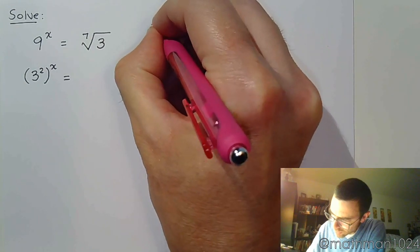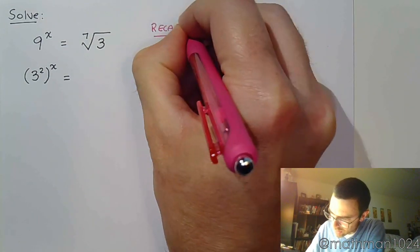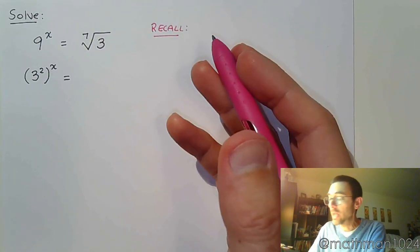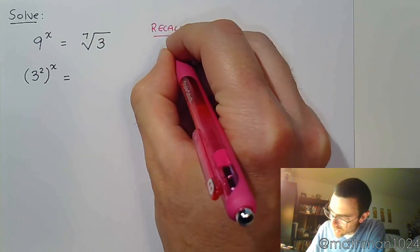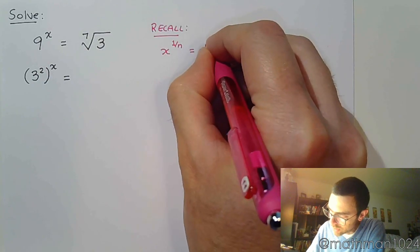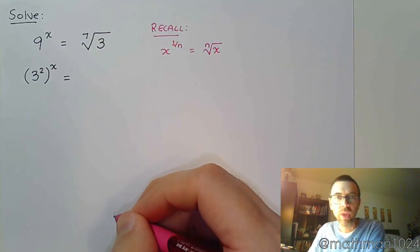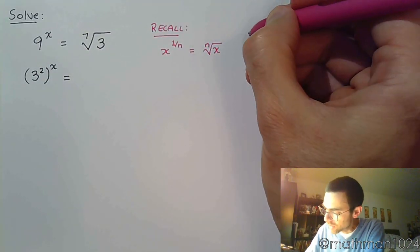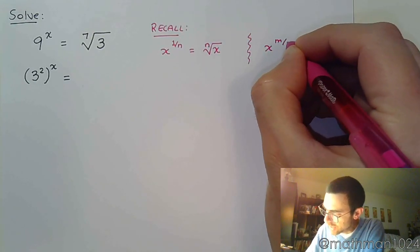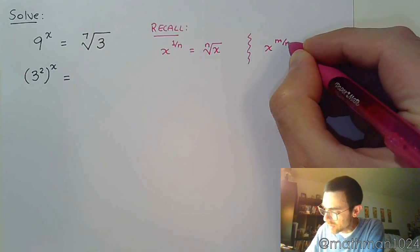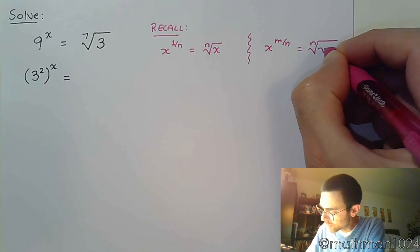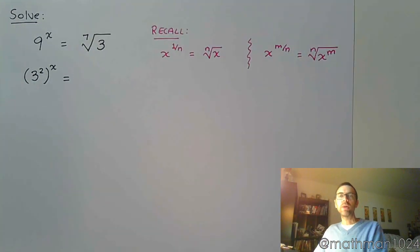Let me remind you of something from our dealings with radicals and rational exponents. So if I have x to the 1 over n power, that means the nth root of x. The other little statement that we had to go along with this is if I have x to the m over n, the denominator, remember, is the index of the radical.